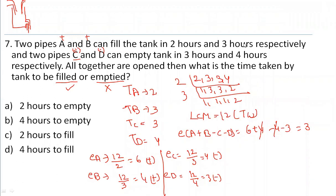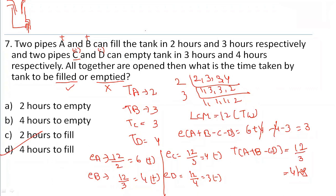A positive combined efficiency of 3 means the tank is being filled. If the result were negative, the tank would be emptied. Time taken by A, B, C, and D together to fill the tank is total work divided by combined efficiency: 12 divided by 3, which equals 4 hours. The answer is 4 hours to fill the tank.